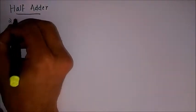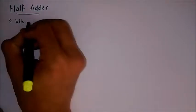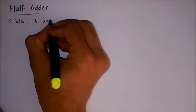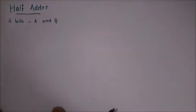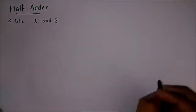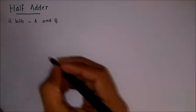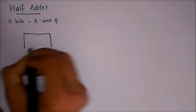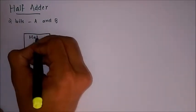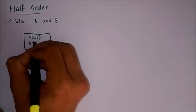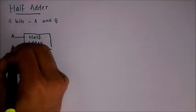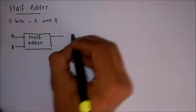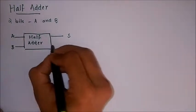In half adder, there are two bits as inputs, that is A and B. This also means that both A and B are single bit inputs. So if we have a half adder like this, this block represents the circuit of half adder. We give two single bit inputs A and B, and we get a sum as the output and also a carry.